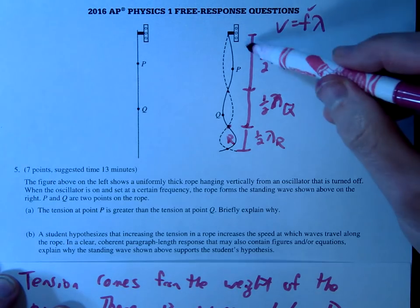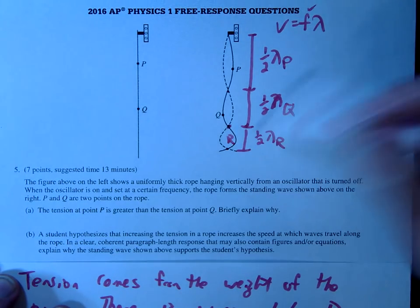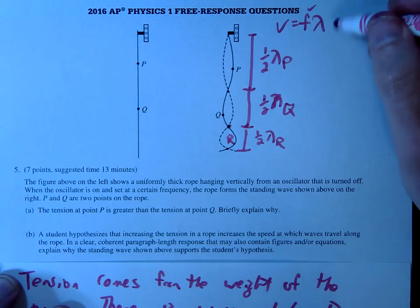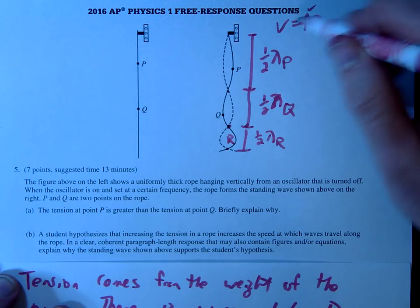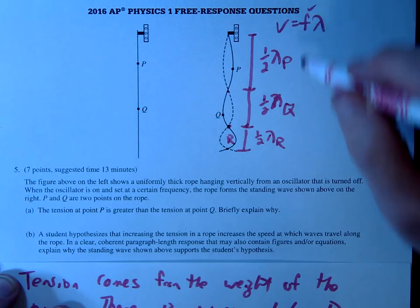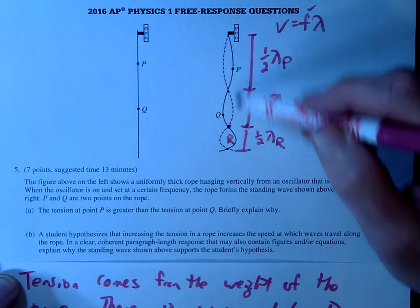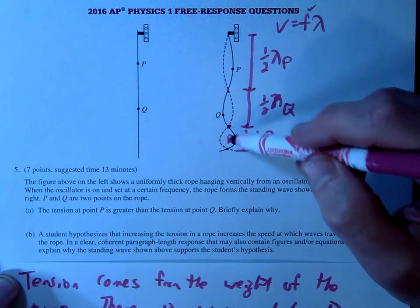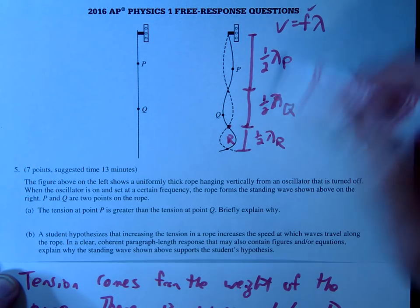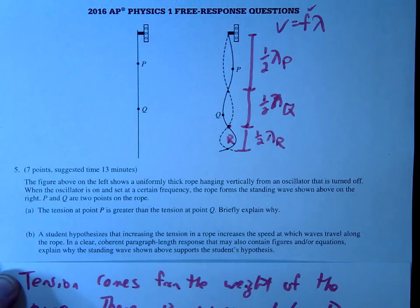And even notice here, it's getting smaller and smaller. So this could be one half of a wavelength that, I don't know, our peak U or R. So notice as we go down the rope, the wavelength keeps getting shorter and shorter. If the wavelength is getting shorter and shorter, that means the velocity is getting shorter.